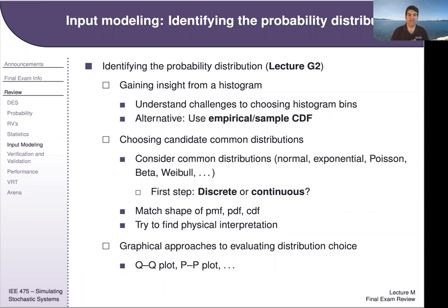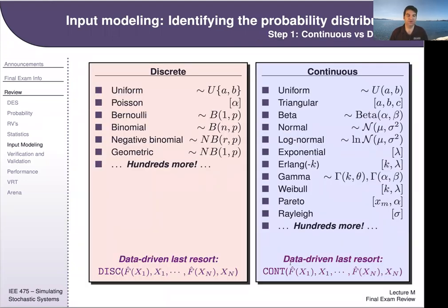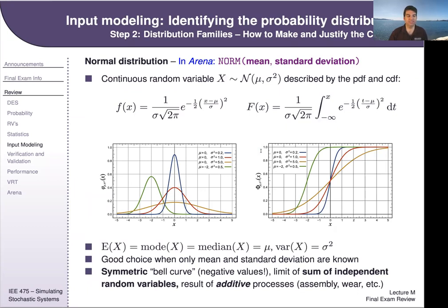From Lecture G on input modeling: gaining insight from a histogram — know the rules for choosing the right number of bins. Be able to spot whether data are discrete or continuous, as that determines which distribution family to fit. Know how QQ plots and PP plots give a visual sense of fit before running a formal goodness-of-fit test. QQ plots give a coarse-grain feel; PP plots give finer-grain discrimination.